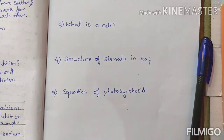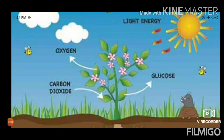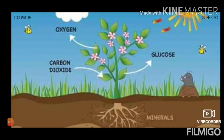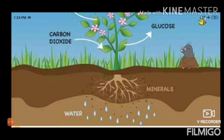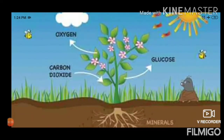Photosynthesis is the process by which plants make their own food in the presence of sunlight, carbon dioxide present in air, water and minerals absorbed from the soil, and chlorophyll present in the leaves. They get heat from sunlight, carbon dioxide from air, and water and minerals from the soil. When they get all these things, the chlorophyll present in the leaves helps them to prepare the food effectively.